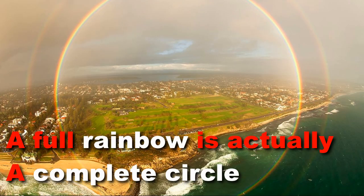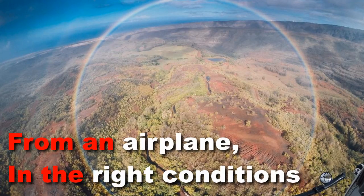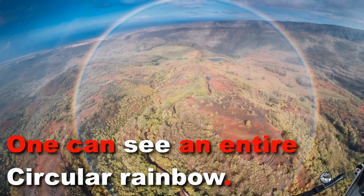A full rainbow is actually a complete circle, but from the ground we see only part of it. From an airplane, in the right conditions, one can see an entire circular rainbow.